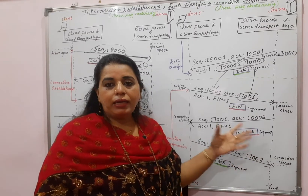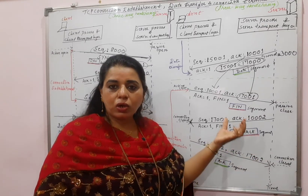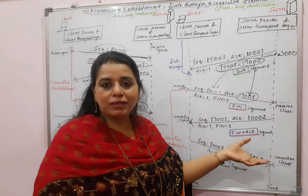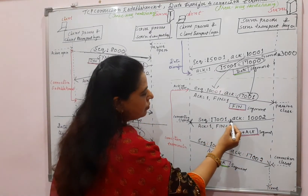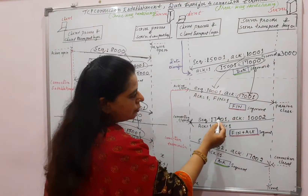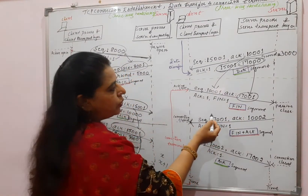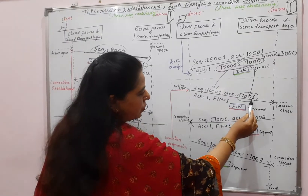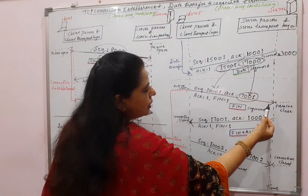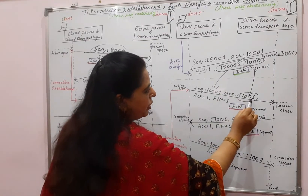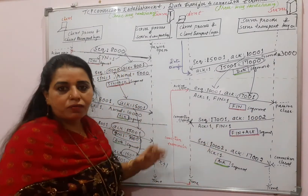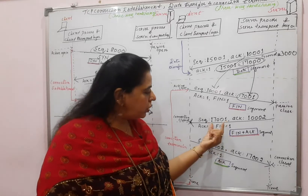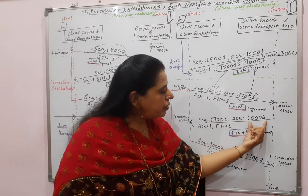Any FIN and ACK segment which does not carry any data will consume a sequence number, so this sequence number will not be used again by the server side. You can see it is mentioning sequence number as 17001. You can relate: the acknowledgement number from the client to the server is 17001, so next time when the server sends data, the first byte number will be 17001. That is why it writes sequence number as 17001. The acknowledgement value here is written as 1002.